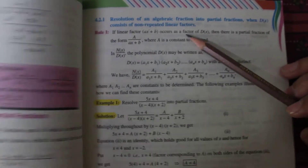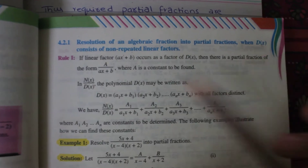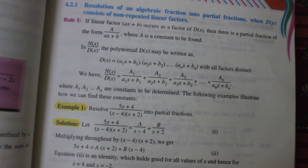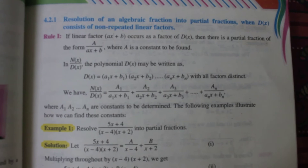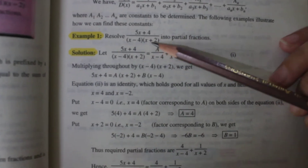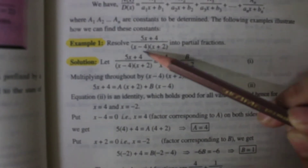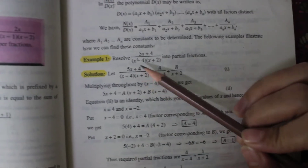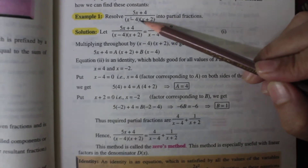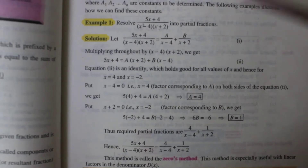The first rule of partial fractions: resolution when D(x) consists of non-repeated linear factors. A linear factor means the highest power of the variable is 1. For example, in 5x+4 / [(x−4)(x+2)], there are two linear factors: (x−4) and (x+2), each with highest power 1. Non-repeated means each factor appears only once — if it were (x−4)² or (x−4)³, it would be repeated, but here each appears only once.